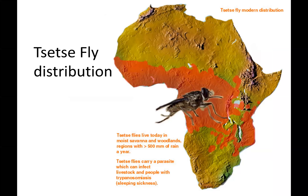When we think of the tsetse fly distribution, we think it lives in the moist savannah, woodland regions — needs about 500 millimeters of rain. The tsetse flies carry a parasite which infects livestock and people with trypanosomiasis, the sleeping sickness. You may be on a mission trip one day and end up in one of those areas — you'd definitely be told to avoid a bite from the tsetse fly. Five hundred millimeters converts to right under 20 inches — about 19.685 inches of rain a year.